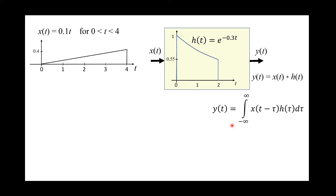y(t), that is the output at the present, depends on x(τ) — the past — and h(τ) processing the past input and present input. The next step in carrying out this integral is finding h(τ), and that is very simple: wherever we see t, we replace it by tau.